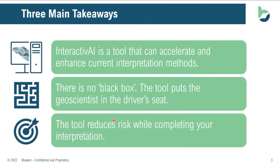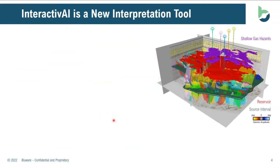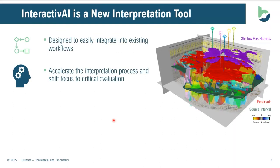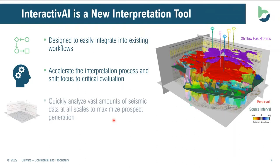This has direct value back to the different assets as well as the business units. Interactive AI is really positioned as a new interpretation tool, meant to integrate into existing workflows. As geoscientists work in tandem with it, we want to be able to directly consume those outputs into our interpretations. Usually 80% of our time as geoscientists is spent interpreting data — combing through it — and the 20% is on critical evaluation. Now, utilizing the cloud as well as deep learning solutions, we can flip that: 20% interpretation and 80% shifted towards critical evaluation and understanding the data. You can also quickly analyze vast amounts of data at all sorts of scales for your prospecting workflows.